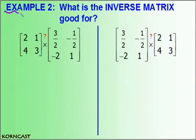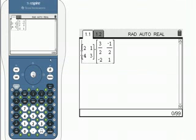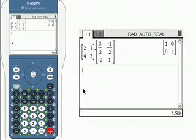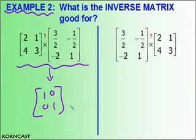Example 2: what is an inverse matrix good for? If I take a matrix and multiply it by its inverse, I should get the identity. I'm going to use technology to demonstrate this. In my graphing utility, I've typed in our matrix and what we found to be our inverse. When I hit enter, I should get the identity matrix. And sure enough, I get the 1, 0, 0, 1 matrix. So indeed, that product does give me the identity matrix — which is exactly what I sought out to do.